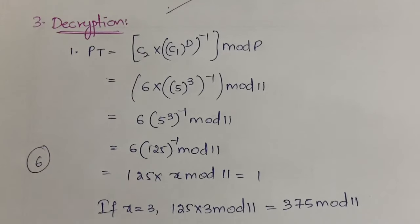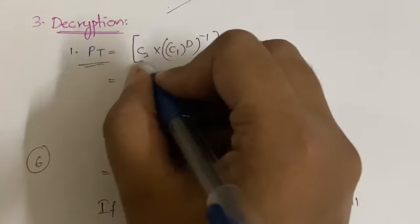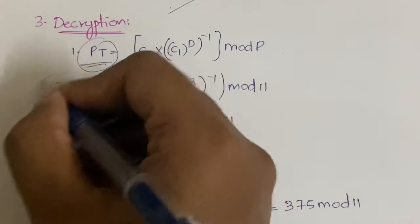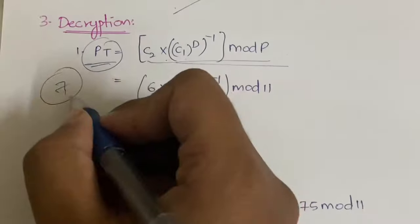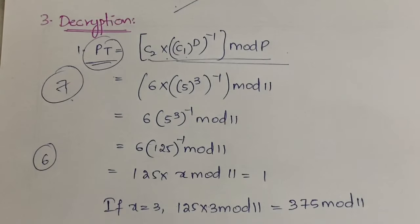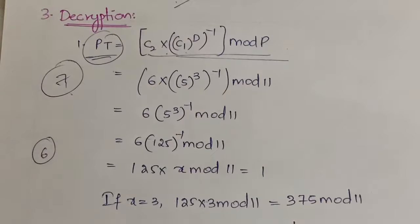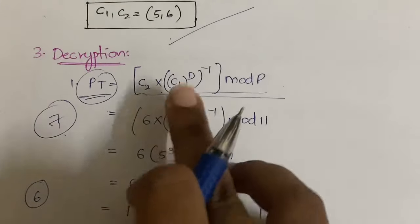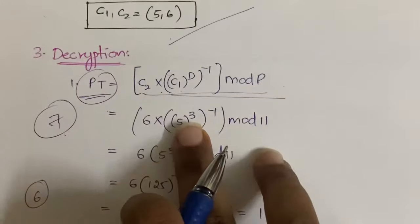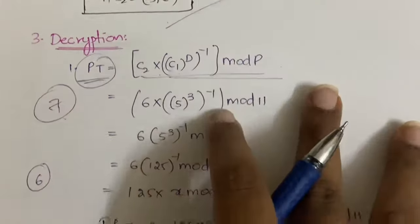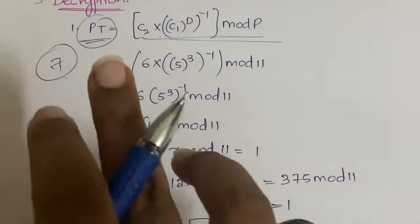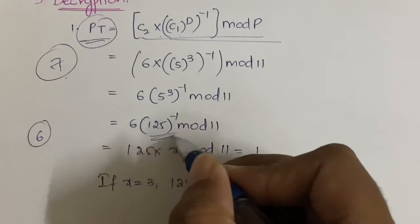In the third step we do decryption. Listen carefully — it is a bit complicated. The plain text is recovered using: pt = c2 × (c1^d)^(−1) mod p. We assumed pt = 7, so after this calculation we should get 7. Substituting: 6 × (5^3)^(−1) mod 11. 5^3 = 125, so we have 6 × 125^(−1) mod 11.